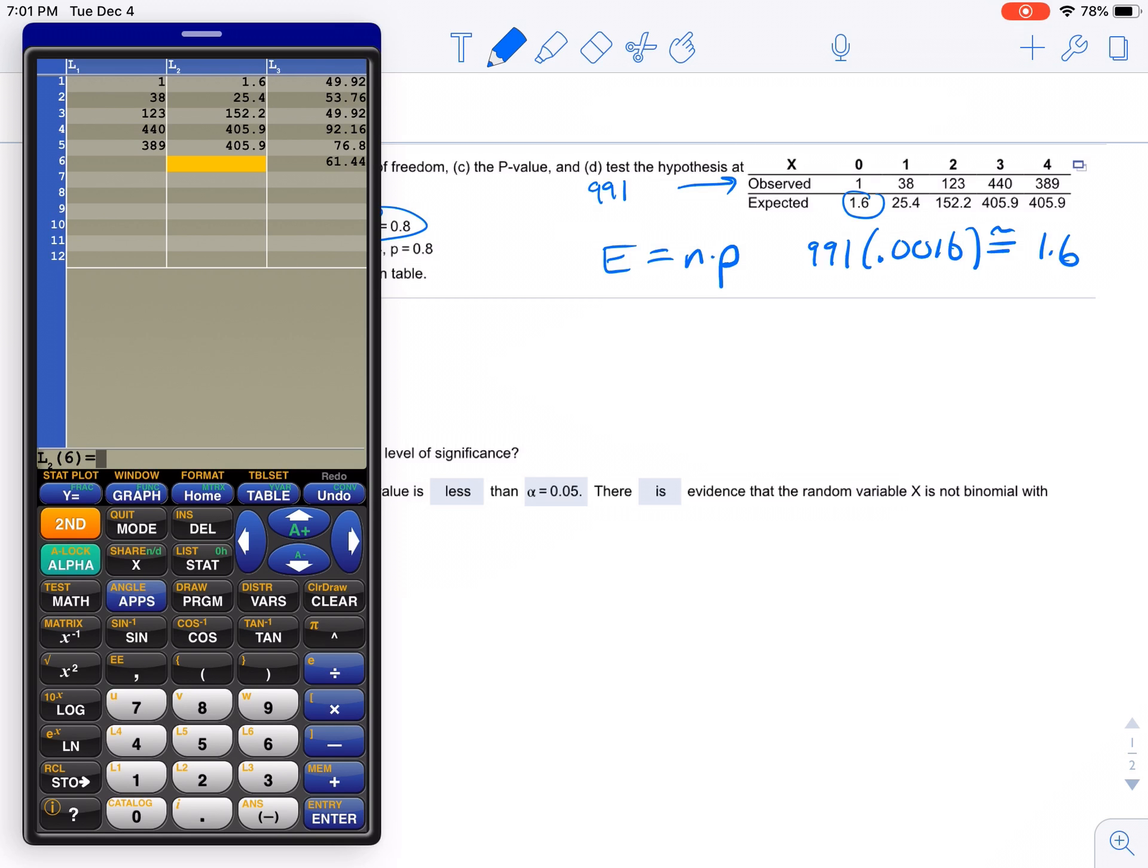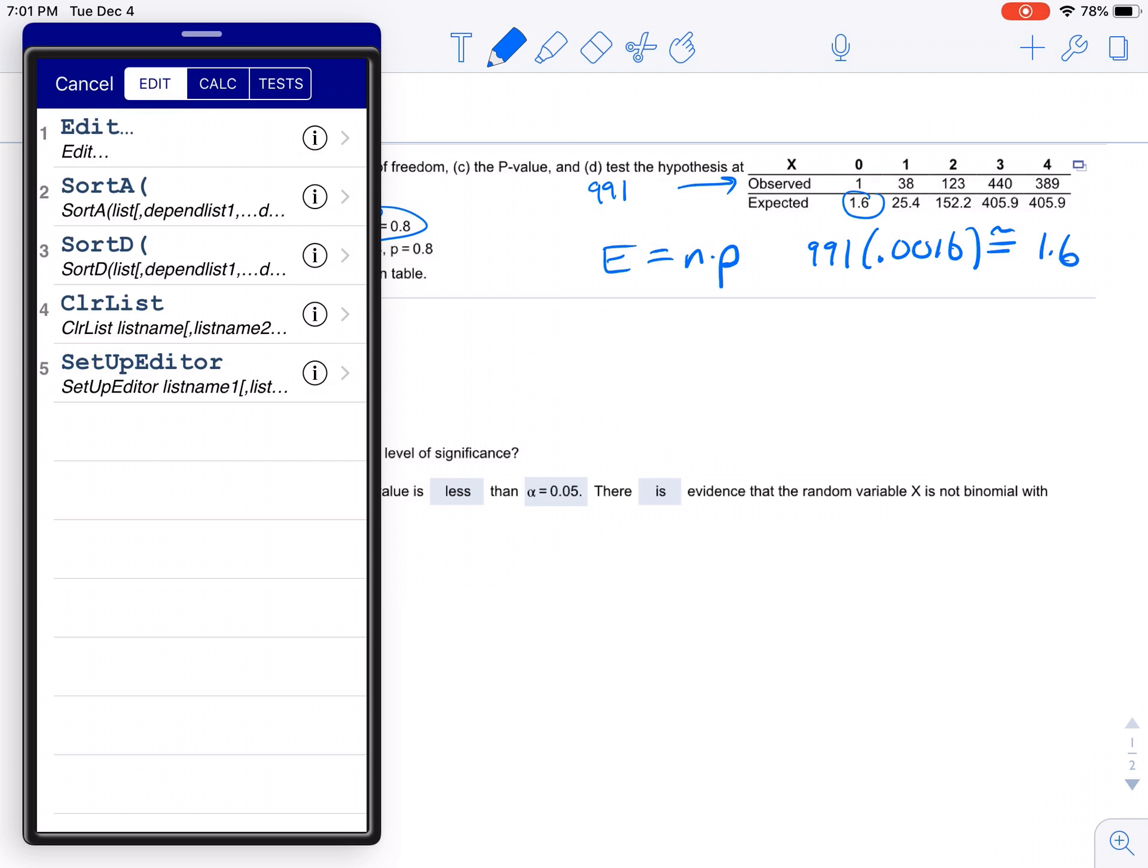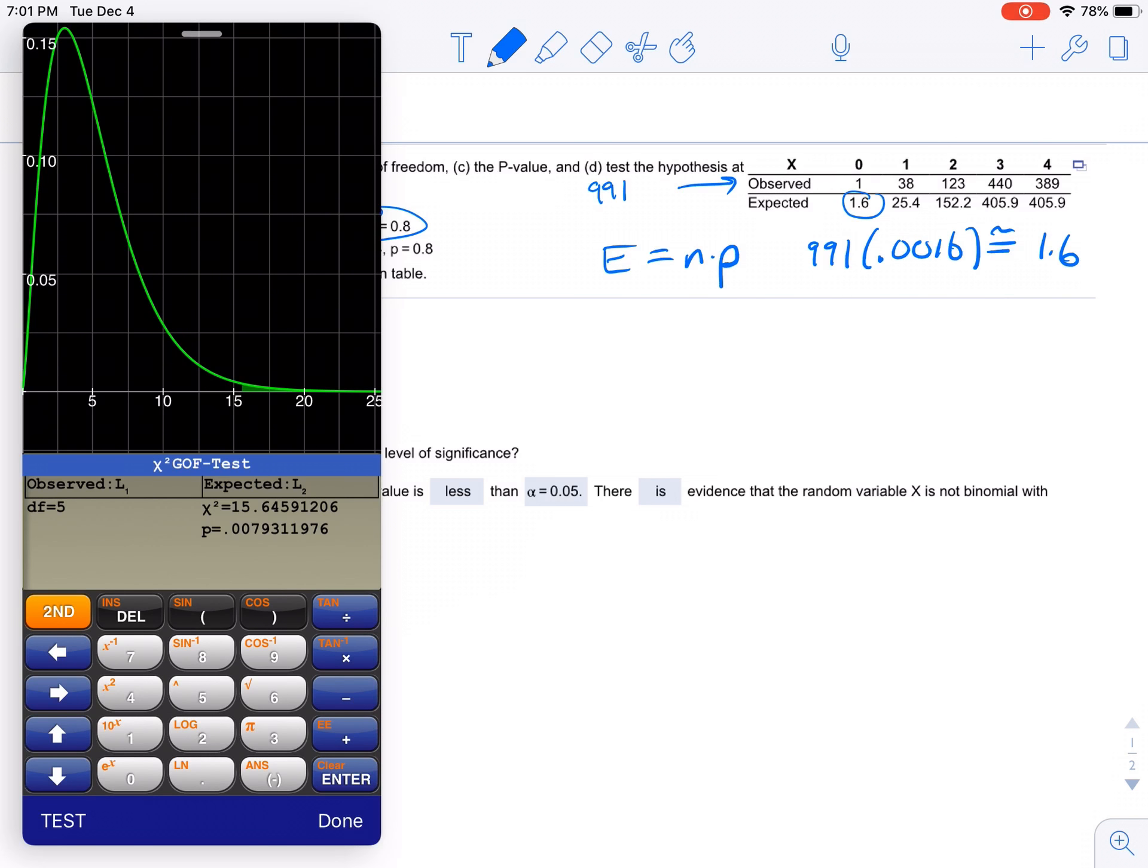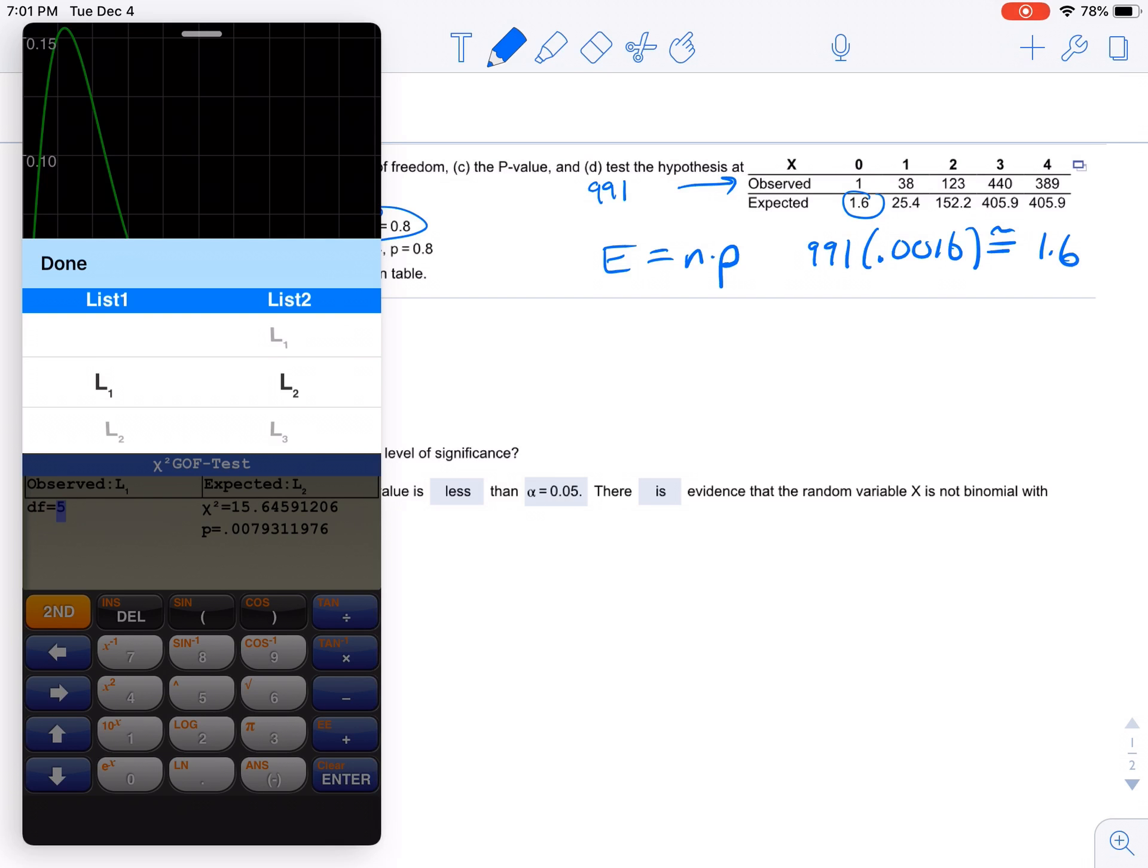So those are the observed and expected. Now, when we go to stat, test, chi-square, goodness of fit, in L1 we put the observes, and in L2 we put the expected, right? So we go to done.